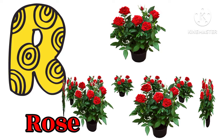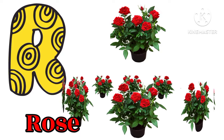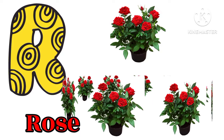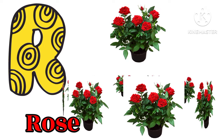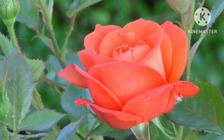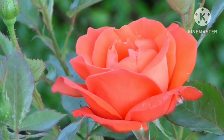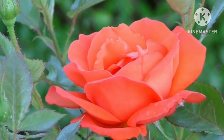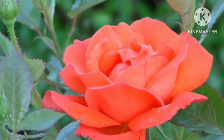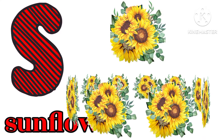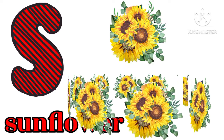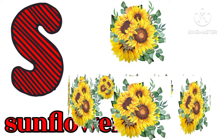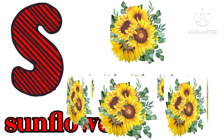R for Rose — Rose means Gulab. S for Sunflower — Sunflower means Chantra.